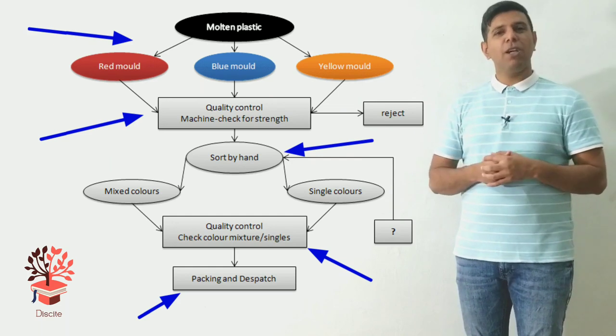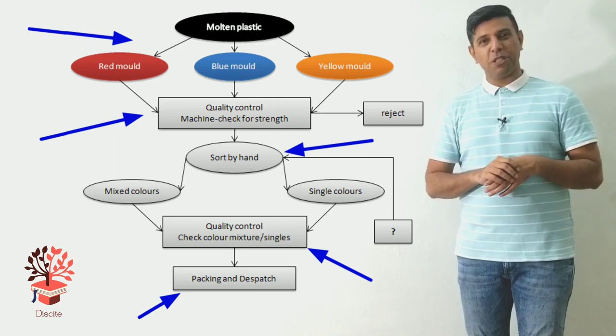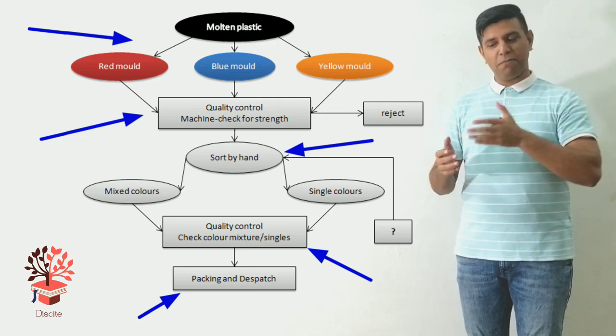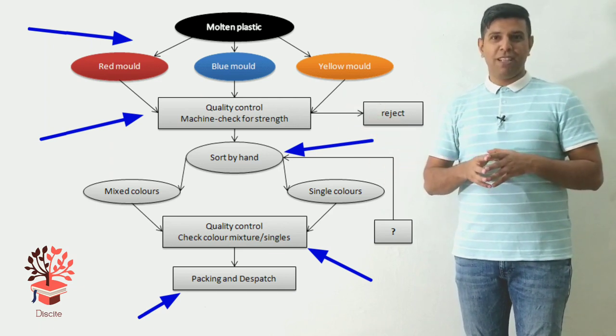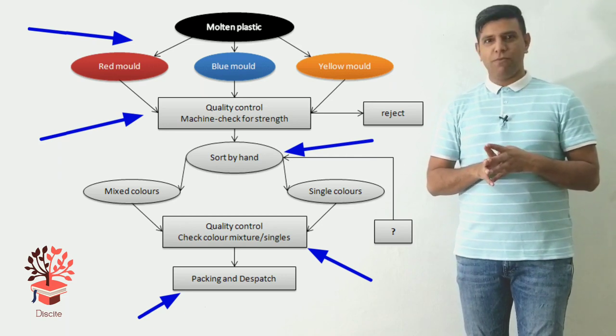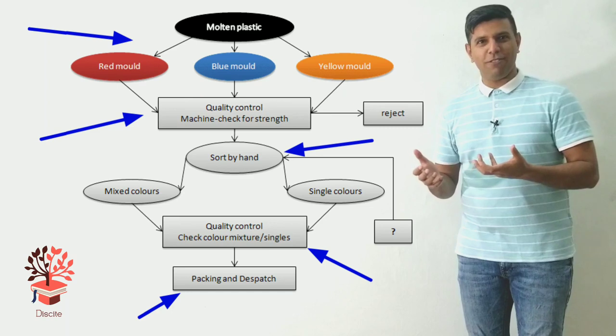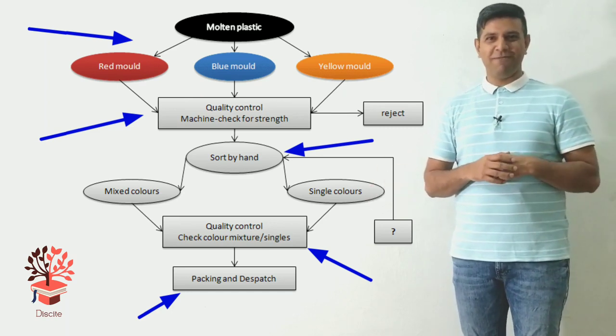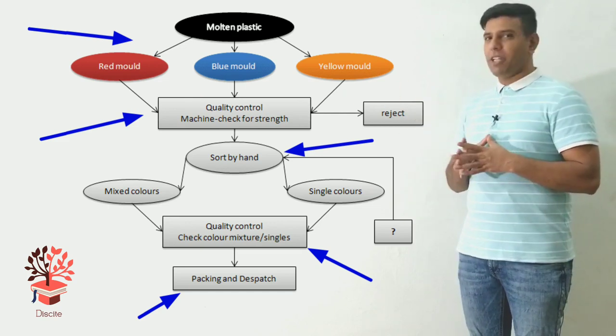Second step: quality control, the automatic one. Third step: sorting manually. Manually, by hand. Automatic, manual - like the cars, automatic and manual. In your country, how do you drive? Do you have right-hand drive or left-hand drive? We have right-hand drive. We sit on the right-hand side of the car. We drive on the left-hand side of the road.